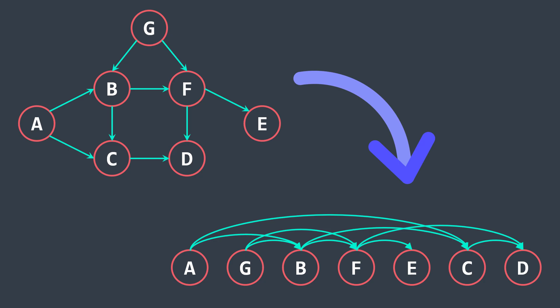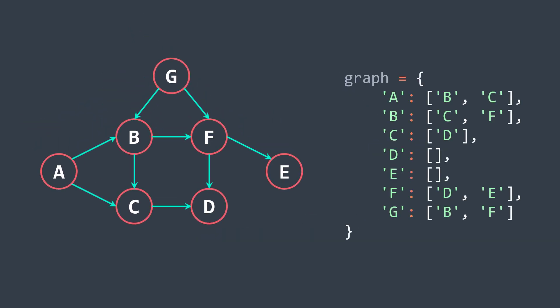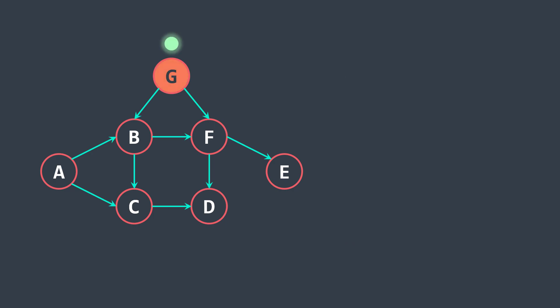To see how it works, let's apply it to this directed acyclic graph. Let's start from this node, orange means that it's already visited. Now we visit every neighbor, let's start by this one.